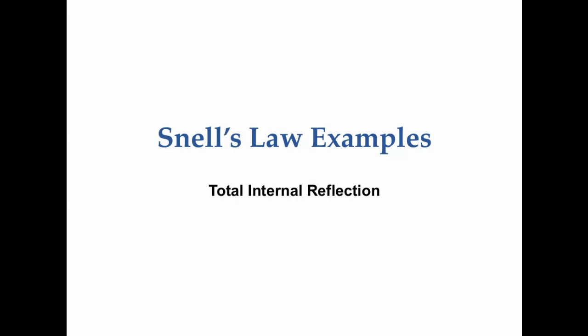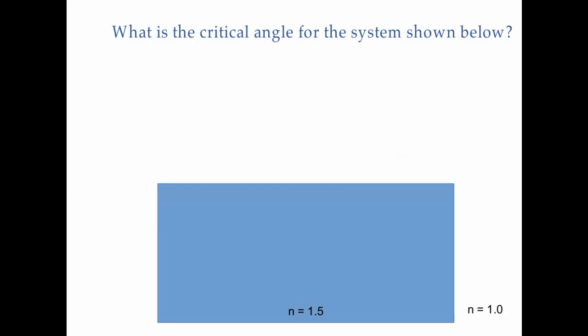In this video we're going to look at Snell's law, specifically total internal reflection. I give you a system consisting of a blue slab of material with an index of refraction of 1.5, surrounded by air with an index of refraction of 1. And I ask: what is the critical angle?